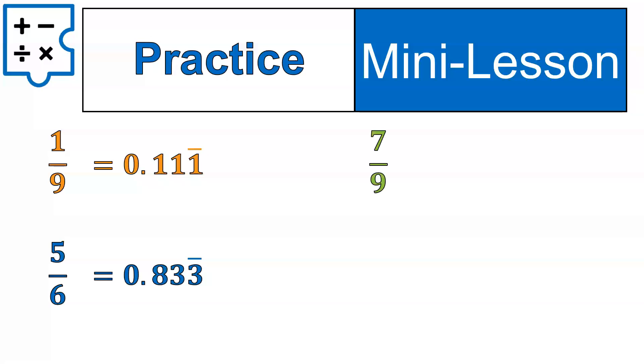Okay, let's try another one, 7 ninths. This is kind of an interesting one. 0.77 repeating. The 7 repeats forever.